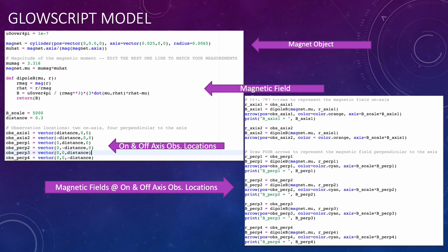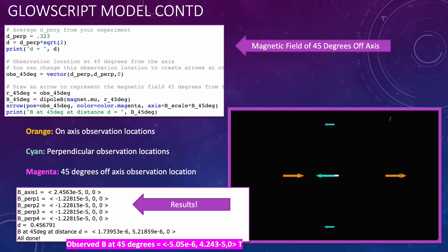Then I used the magnetic field function at each of those locations to create magnetic field arrows. I then inserted my observed d_perp distance and used the magnetic field function to create an arrow for the predicted magnetic field at 45 degrees off axis.